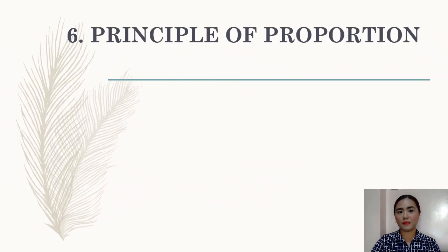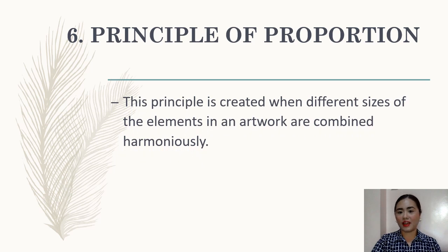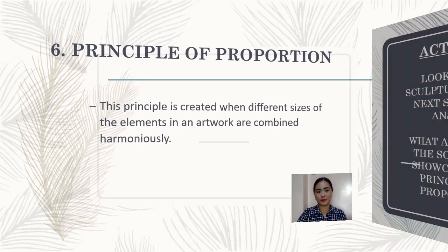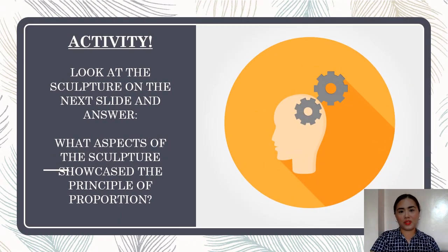Next, we have the principle of proportion. This principle is created when different sizes of the elements in an artwork are combined harmoniously. Please look at the sculpture on the next slide and answer: What aspects of the sculpture showcase the principle of proportion?